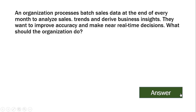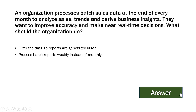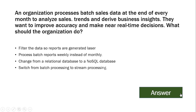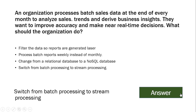An organization processes batch sales data at the end of every month to analyze sales trends and derive business insights. They want to improve accuracy and make near real-time decisions. What should the organization do? The options are: filter the data so reports are generated faster, process batch reports weekly instead of monthly, change from a relational database to a NoSQL database, or switch from batch processing to stream processing. The answer is: switch from batch processing to stream processing.